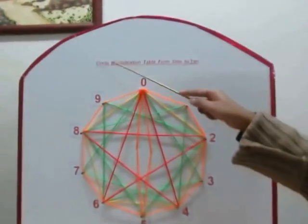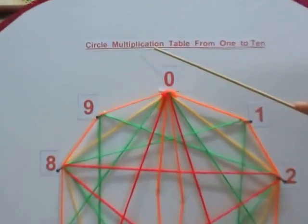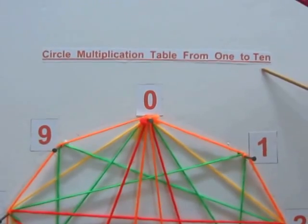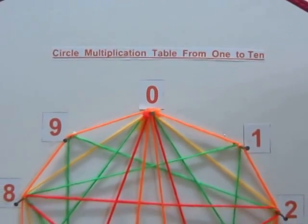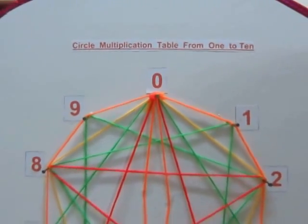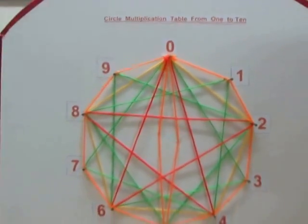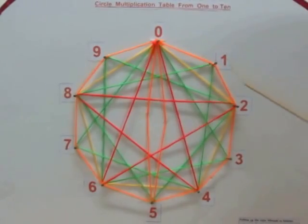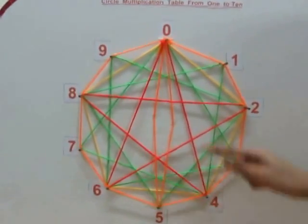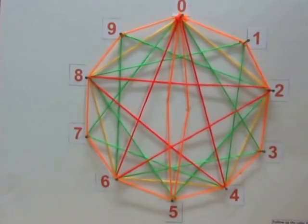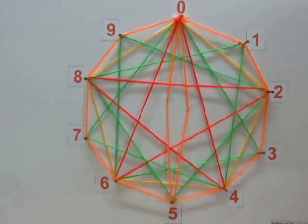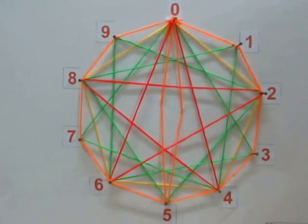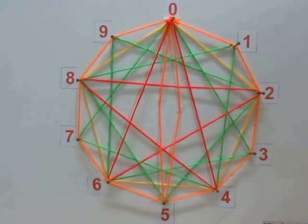It is called Circle Multiplication Table from 1 to 10. It is easy and simple to learn. There are numbers from 1 to 10, and I am using some colourful threads that are arranged in a different pattern. Let us start.